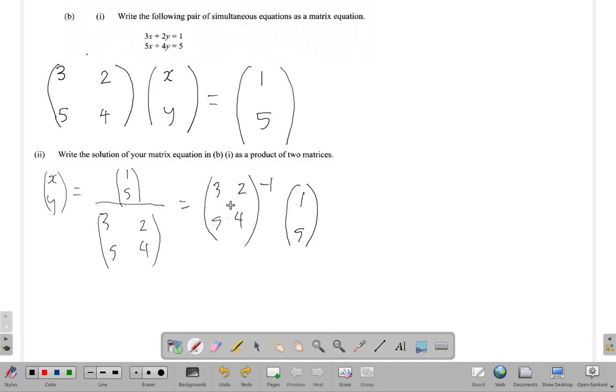If you should solve it, you'd have to find the determinant of this, put one over the determinant, then interchange three and four, change sign of two and five, then multiply it out. But they gave only two marks and doing all of that would be a lot of work for just two marks. So probably this is all they want.